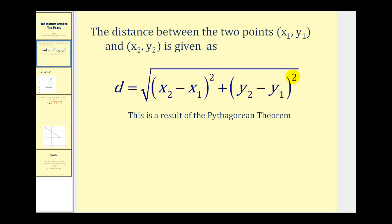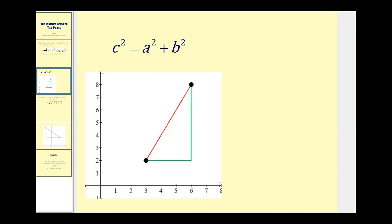Even though this formula looks quite different from the Pythagorean Theorem, it is a result of the Pythagorean Theorem. I'd like to take a moment and show where this formula comes from. We know that for a right triangle, c squared is equal to a squared plus b squared, where c is the length of the hypotenuse and a and b are the lengths of the two legs.